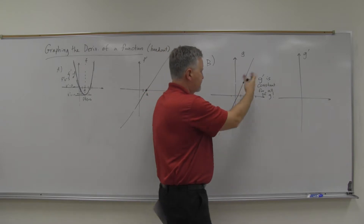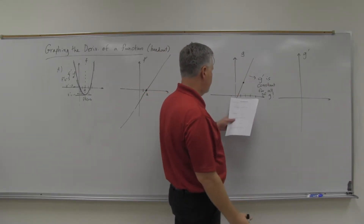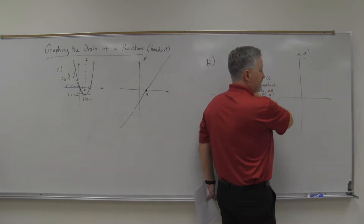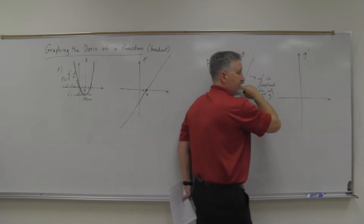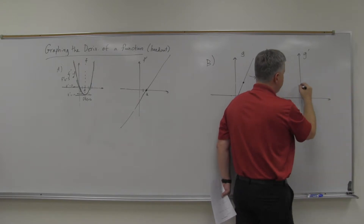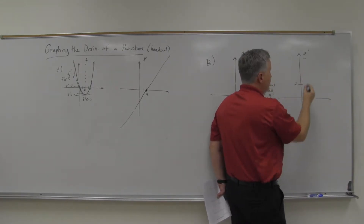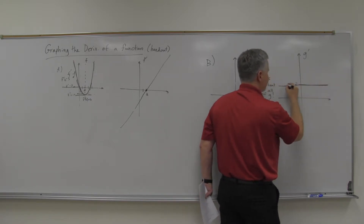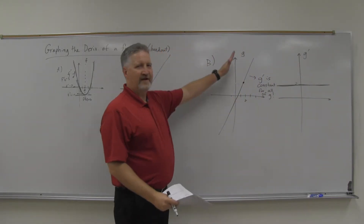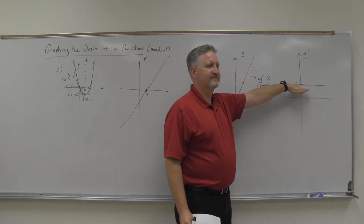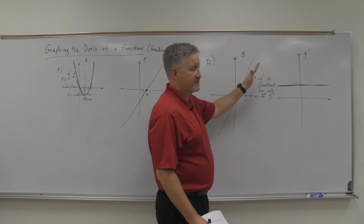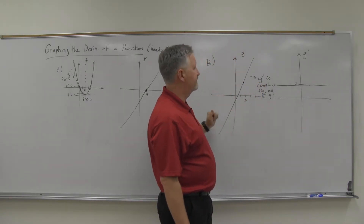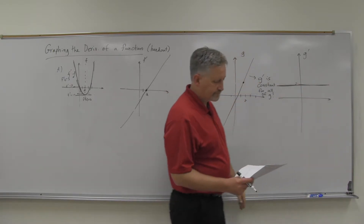So the derivative is whatever the slope of that line is throughout the whole thing — it's the same everywhere. Let's say it's about three. Since the slope is constant, the derivative is constant. So over here, it's going to be three all the way across — three here, three here, three here. What do you get? Just a horizontal line. So if you've got a straight line, the derivative graph is just going to be a horizontal line, because the slope is constant.